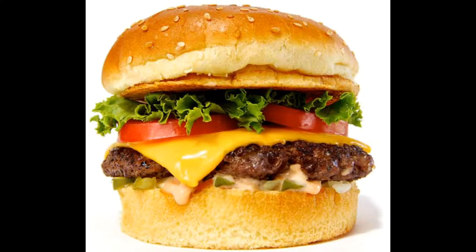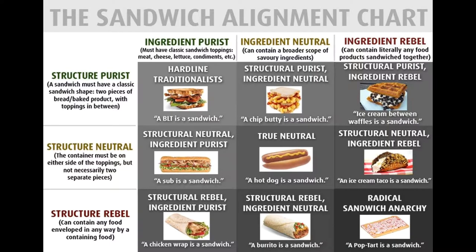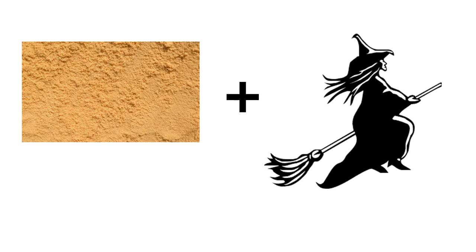Some people would say burgers are sandwiches, others would include hot dogs, while still more would suggest ice cream sandwiches. My guy RSD hooked me up with this chart that attempts to examine and categorize this a bit. It basically boils down to two dimensions: ingredients and structure.